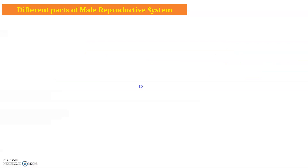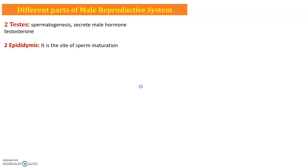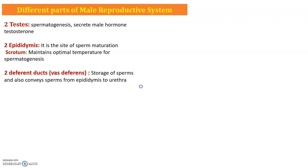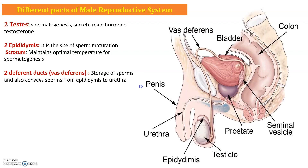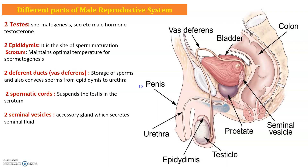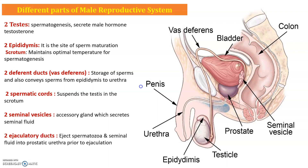The different parts present in the male reproductive system are: two testes, two epididymides (also called acutome), two different ducts also called vas deferens, two spermatical ducts and seminal vesicles, two ejaculatory ducts, prostate gland, penis, and urethra. These are all the parts present in the male reproductive system. Please pause this video and write the explanation and diagram in your notebook.